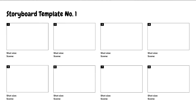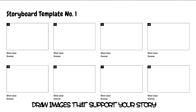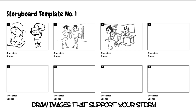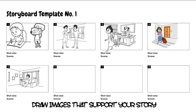Tips for creating successful storyboards include presenting your information in the right order, in a logical and coherent fashion. Always try to include as much of the script as possible and then put your storyboard together with a description of images. Try to keep the visual element simple, appropriate to what has been said in the script.